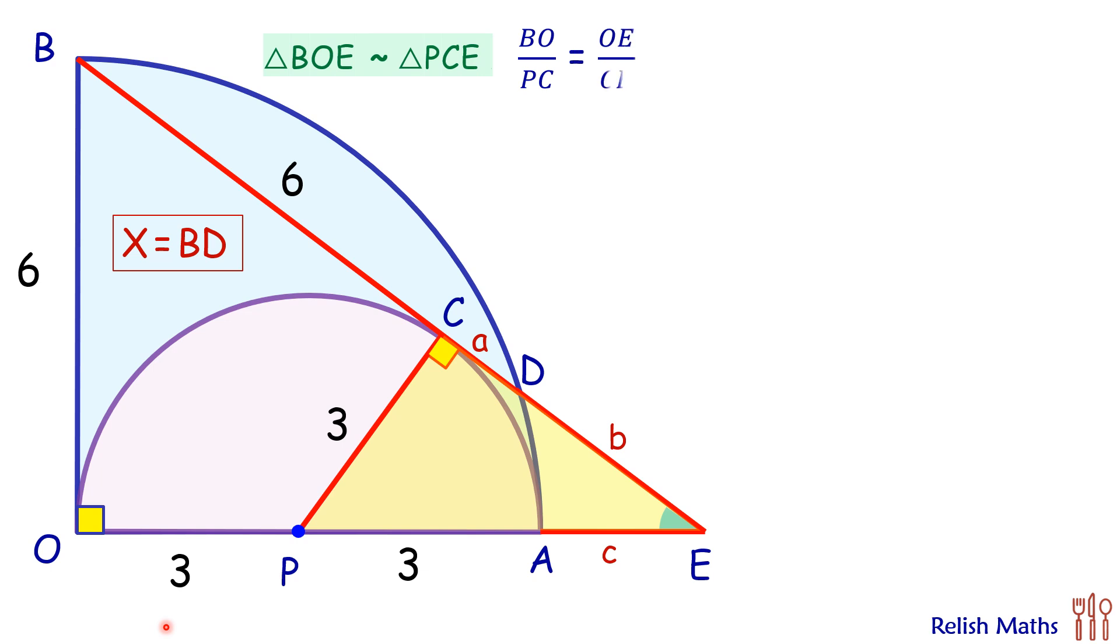Here I am taking BO upon PC. So that's BO upon PC equals OE upon CE. Now the BO length is 6 centimeters, PC is 3 centimeters, OE is 3 plus 3 plus C, and CE is A plus B.